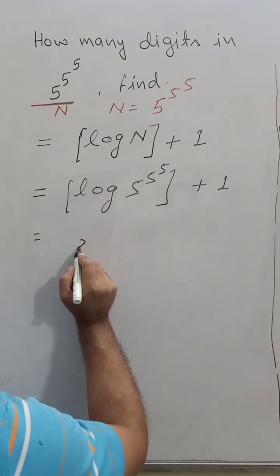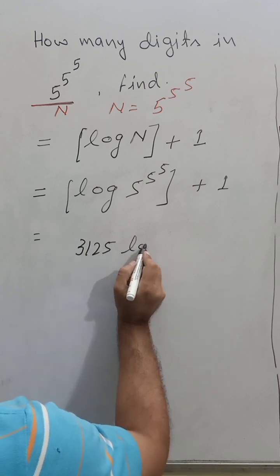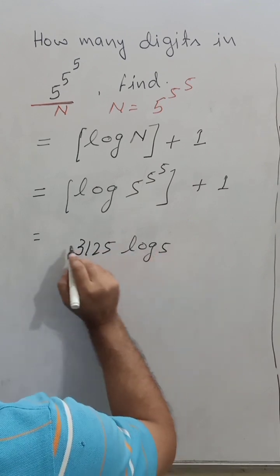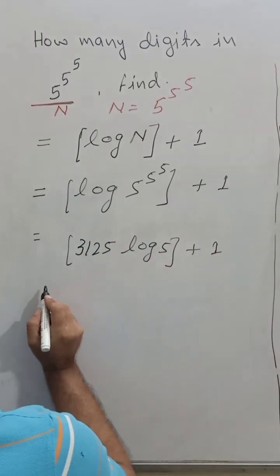5 to the power 5, this will be 3125, and log 5, GIF, plus 1.